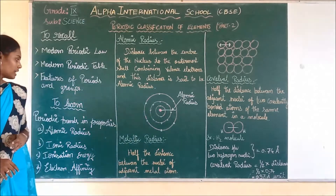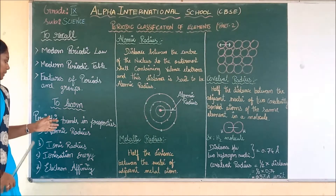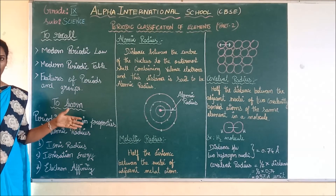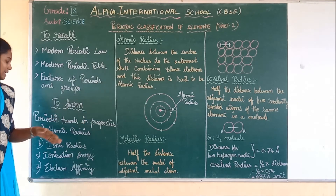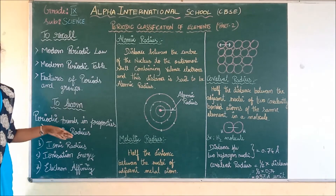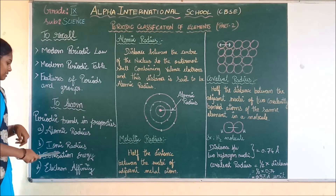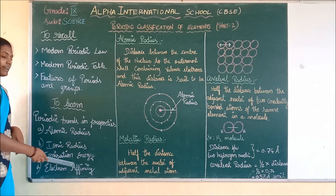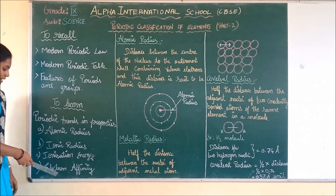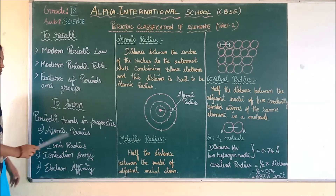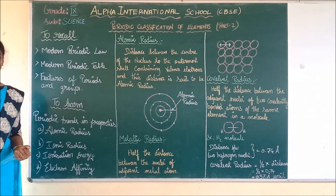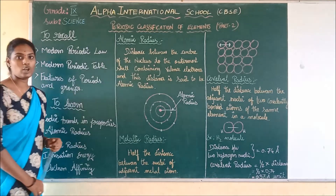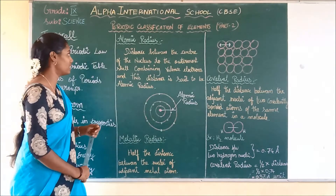Today we are going to learn about periodic table properties. These include the properties of atomic radius, ionic radius, ionization energy, and finally electron affinity. First we are going to discuss the atomic radius.